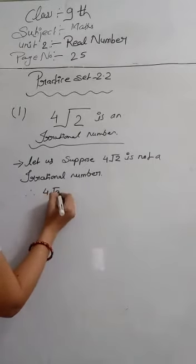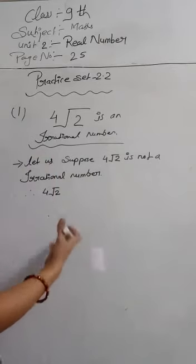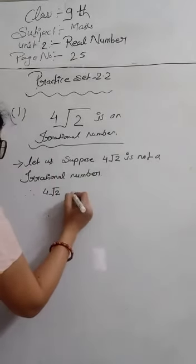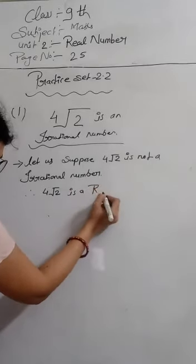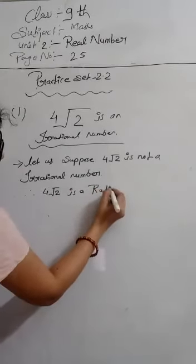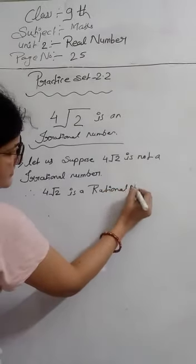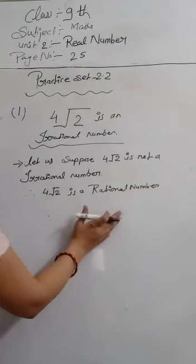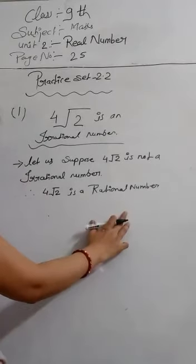Therefore, if 4√2 is not an irrational number, then it is a rational number. If it is not irrational, so it is a rational number.